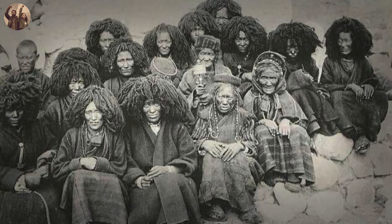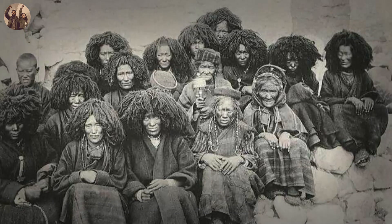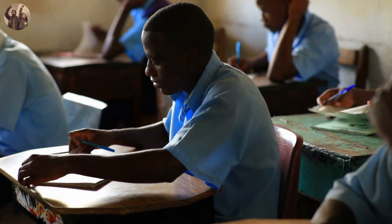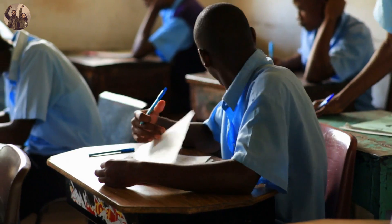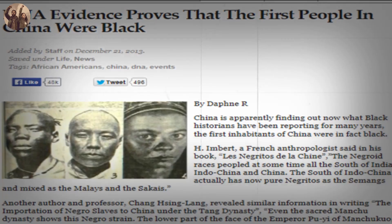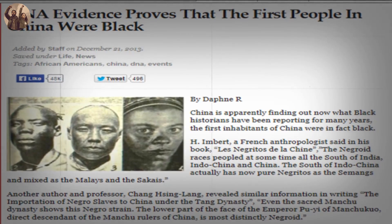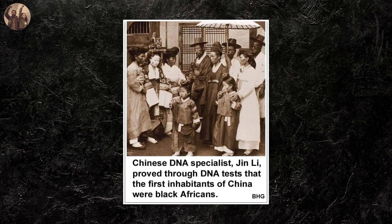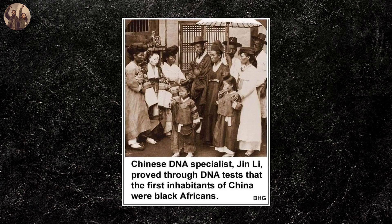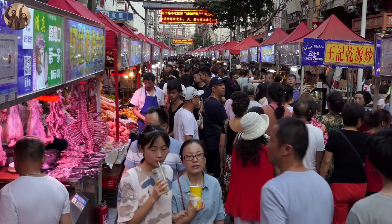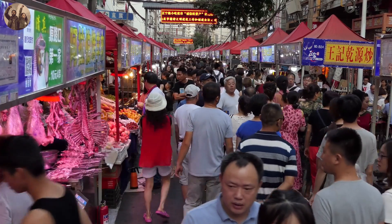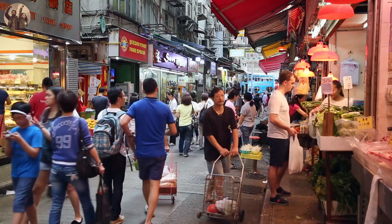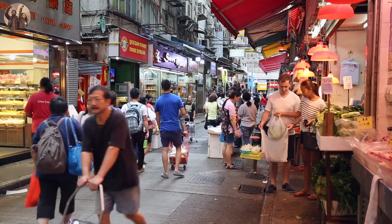Chinese chroniclers report that a Negro empire existed in the south of China at the dawn of that country's history. The notion that blacks were the original inhabitants of China has been thwarted as a result of a sweeping message of white superiority spreading worldwide. In 2005, DNA testing proved that the first inhabitants of China were black Africans. The study, conducted by Chinese DNA specialist Jin Li and a team of scientists, collected more than 12,000 DNA samples from 165 different ethnic groups. Li and his team found that early humans belonged to different species, but modern humans had descended from the East African species.